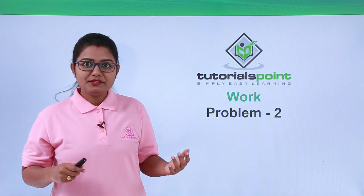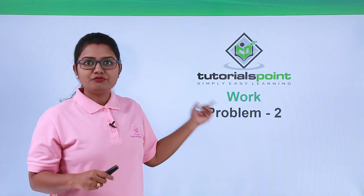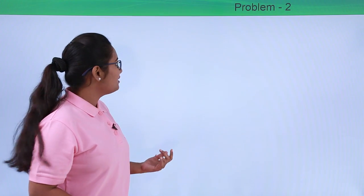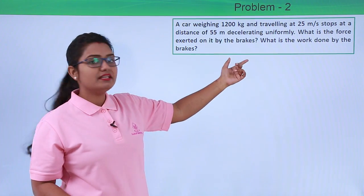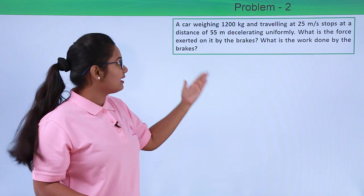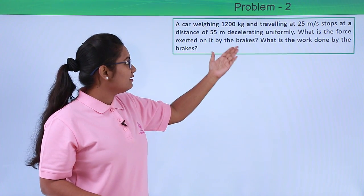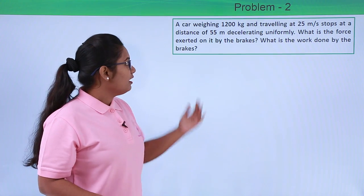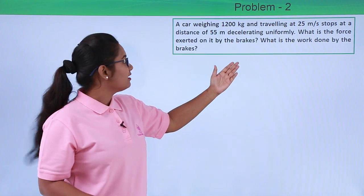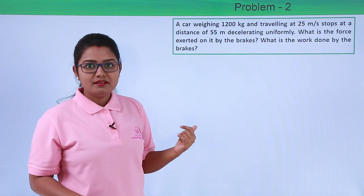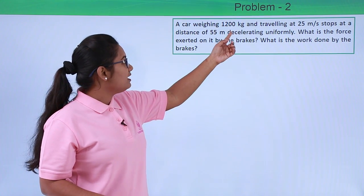Hello everyone. In this video we are going to solve a problem based on the concept of work. A car weighing 1200 kg and traveling at 25 meters per second stops at a distance of 55 meters, decelerating uniformly. We need to find the force exerted on it by the brakes and the work done by the brakes.